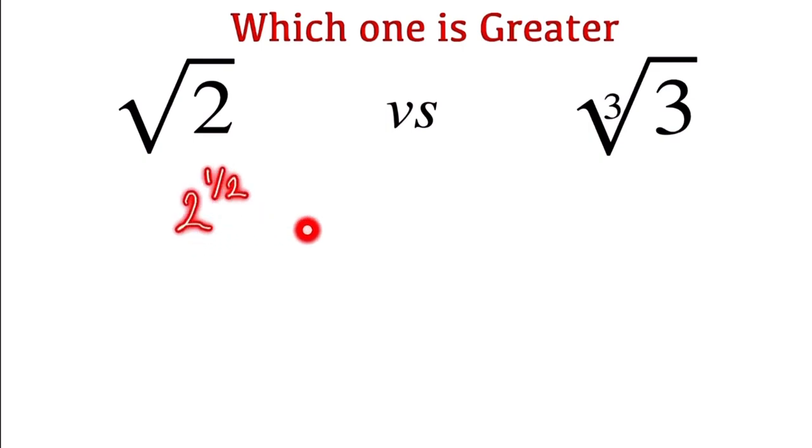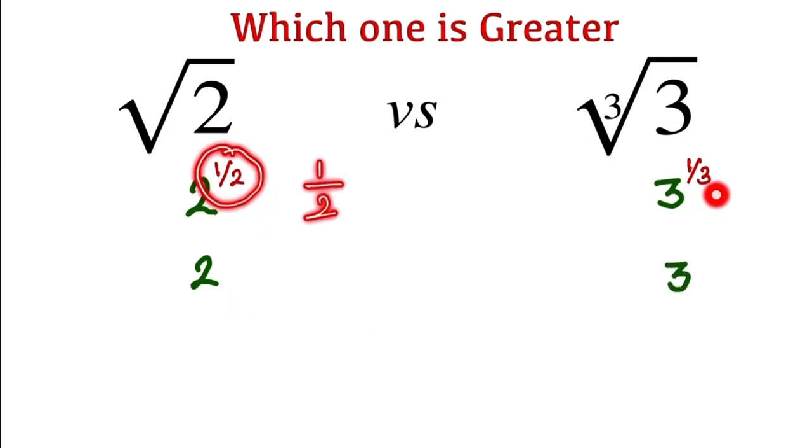And this one can be written as 3 to the power 1/3. So here the base is different, 2 and 3, so we have to make the power the same. So here 1/2, multiply by 3 on both numerator and denominator.